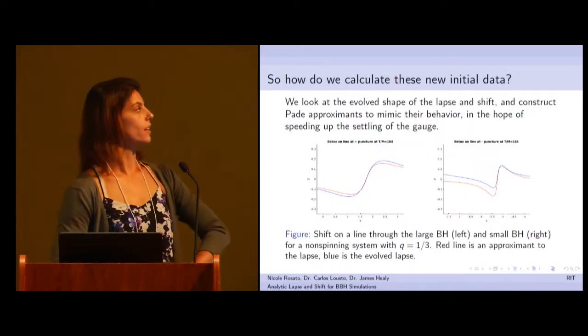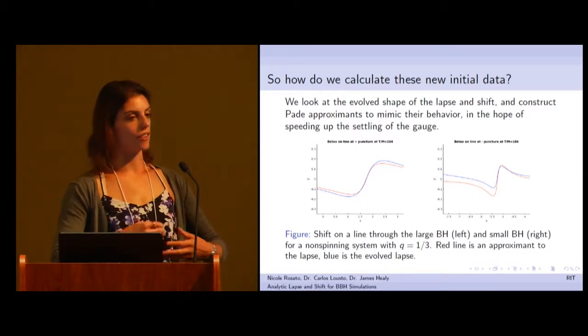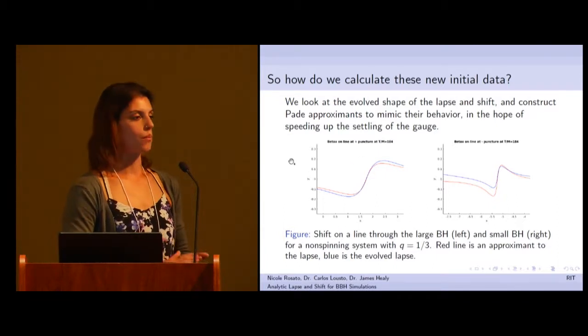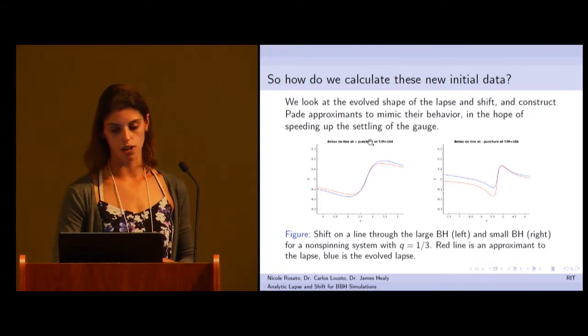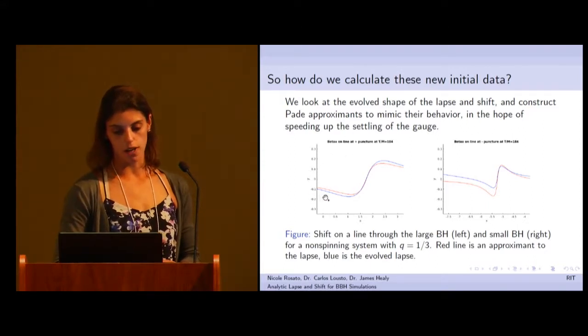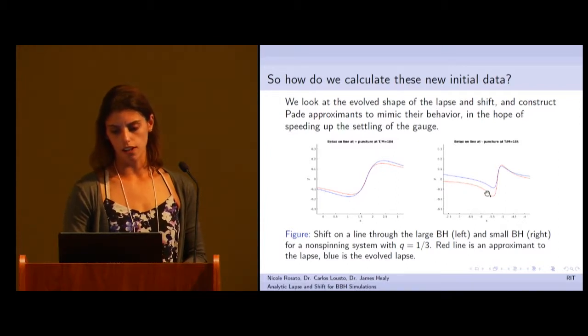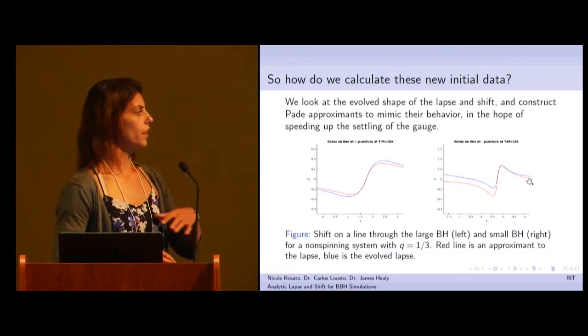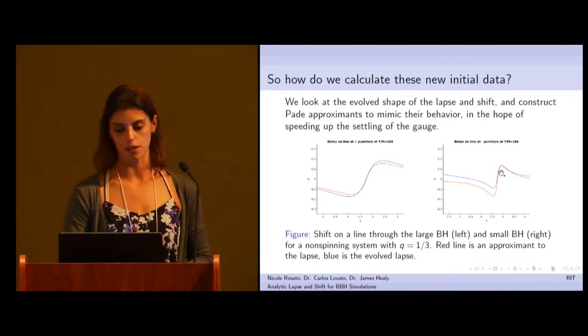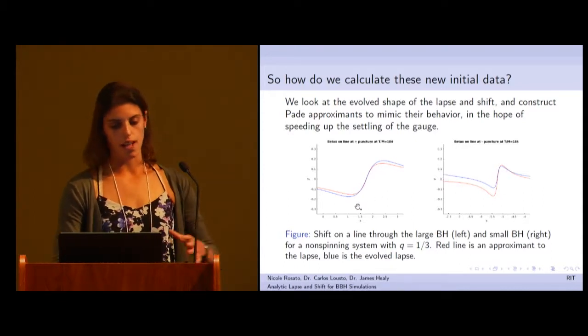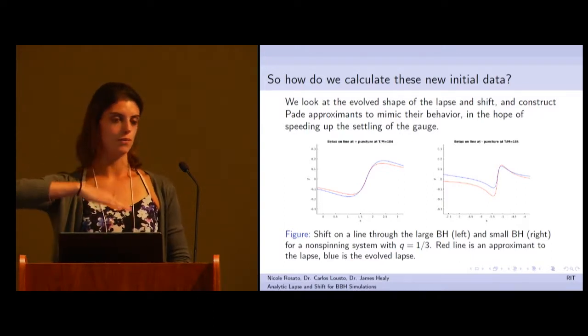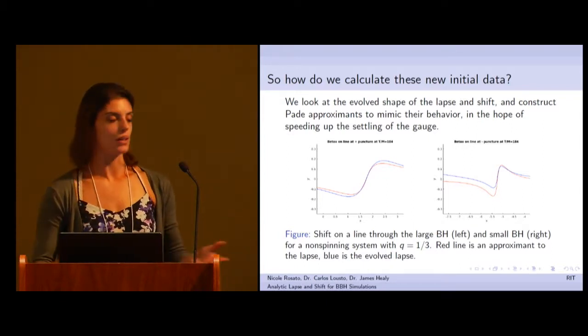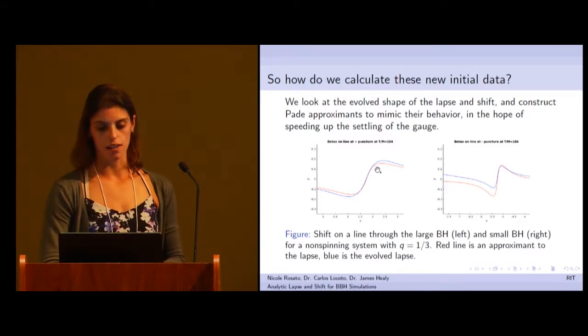So how do we actually calculate these initial data? To do this, we evolve the lapse and the shift for quite some time until it settles to a final state. What you're looking at here is the X component of the shift through the large black hole and through the small black hole. The blue line is the evolved value of the shift here and here, and the red line is the analytic approximate that we're working with, the initial value that we're giving it. You can see that they're pretty much the same shape, which is what we wanted. In reality, the evolved lapse and shift oscillate above and below the y-axis depending on the orbital position of the black holes. We're still investigating why that is, but I just chose a slice that they match up well.